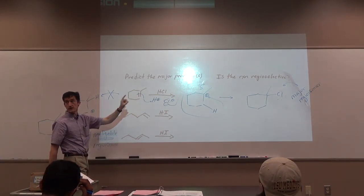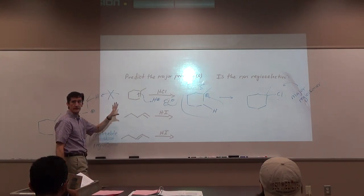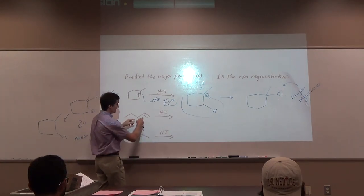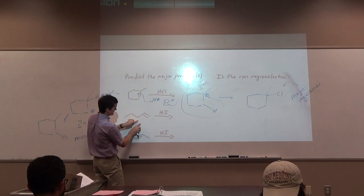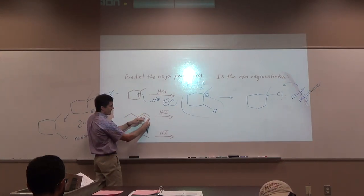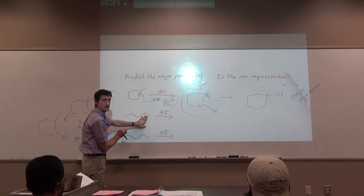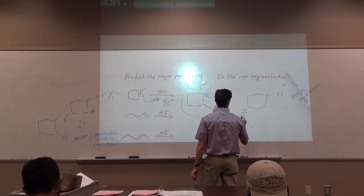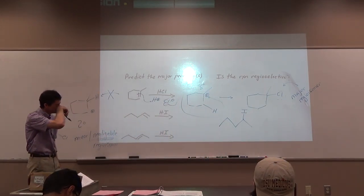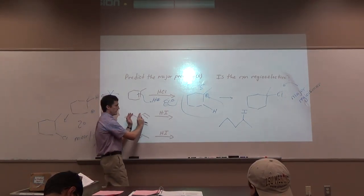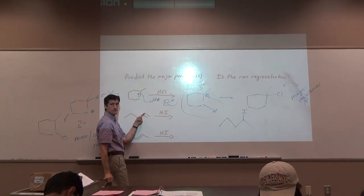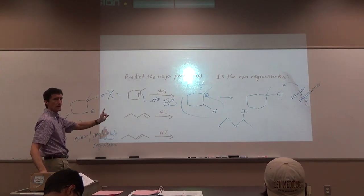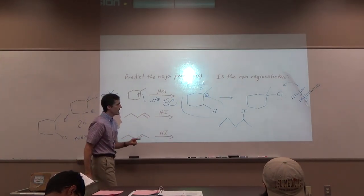What's the product of the next one? Alkene plus HX — it's hydrohalogenation. We're going to make a cation on the left or right? If we make cation over here it would be primary; if over here, it would be secondary. Secondary is more stable. The product has iodine placed at the secondary carbon position. Mechanistically, the pi bond attacks H+, leaving cation here, and then iodine attacks the cation — a two-step mechanism.